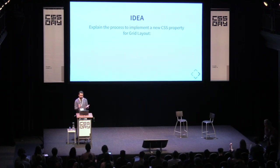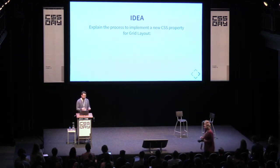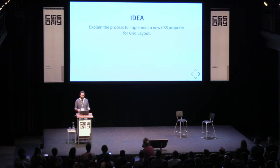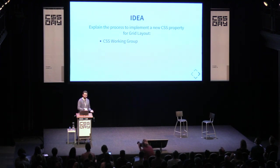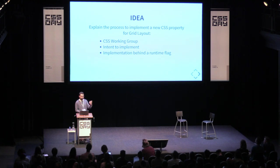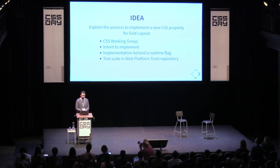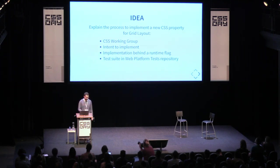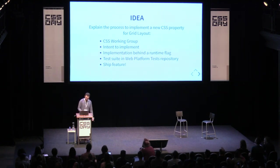The main goal of the talk is that you get to know how the whole process works when you are implementing a feature. There are different steps: the working group discusses whether it makes sense, what could be the name of the property, the syntax, all that. Then you need to tell the community you're going to implement it. You should implement everything behind a runtime flag so authors can start to play with it before it's ready. Then you need to write tests for the feature — they are now shared between the different implementations. And eventually you can ship the feature and make it appear in the stable releases of the browsers.